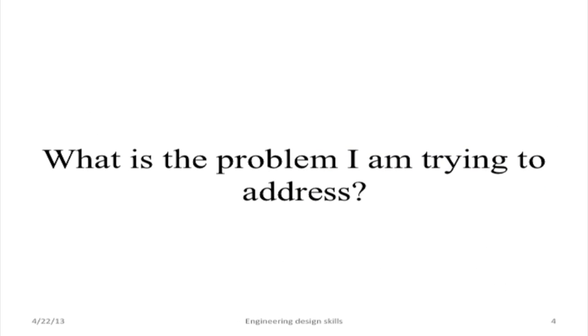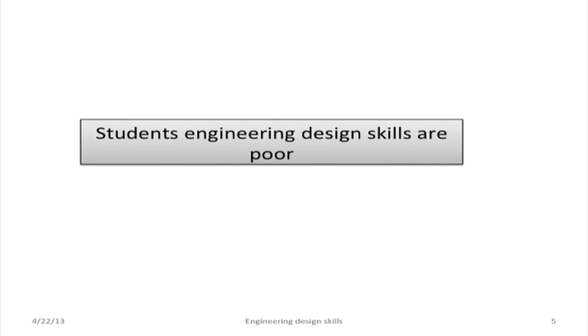What is the problem I am trying to address? Students' engineering design skills are poor. What I mean by engineering design skill is that students should be able to design solutions for open problems. For example, if a battery specification is given and they are supposed to design a battery indicator, they cannot identify which circuit to define — there may be many solutions. Students are not able to decide among such solutions, so these skills are poor with engineering students.